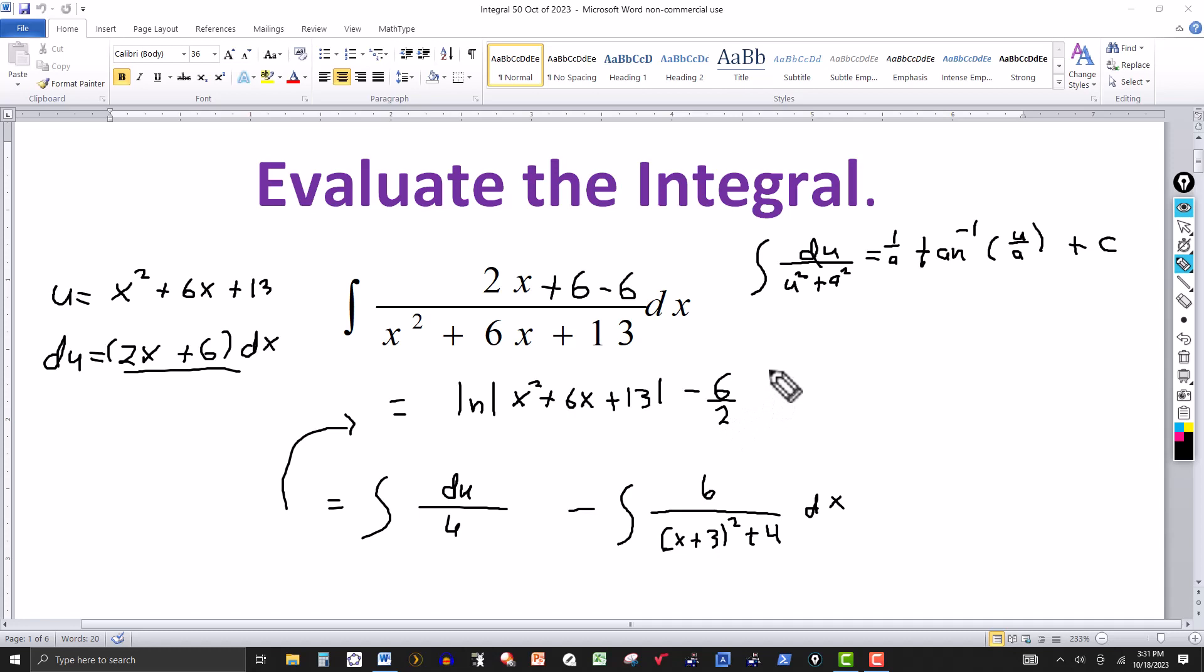And then this would be tangent inverse, or arctangent if you want. And that would be u over a. In our case, u would be x plus 3. U is x plus 3, and the a would be 2.